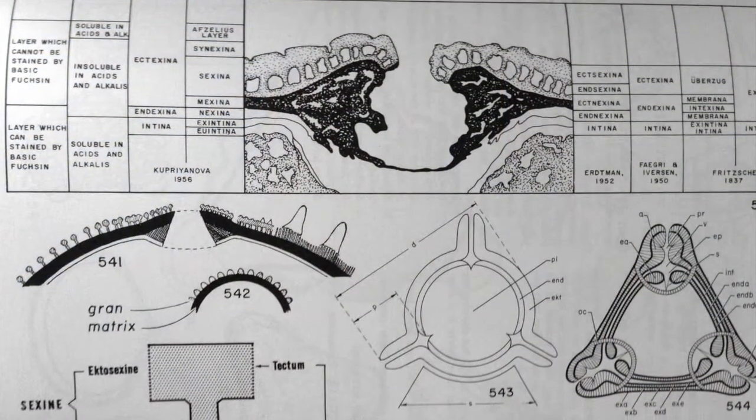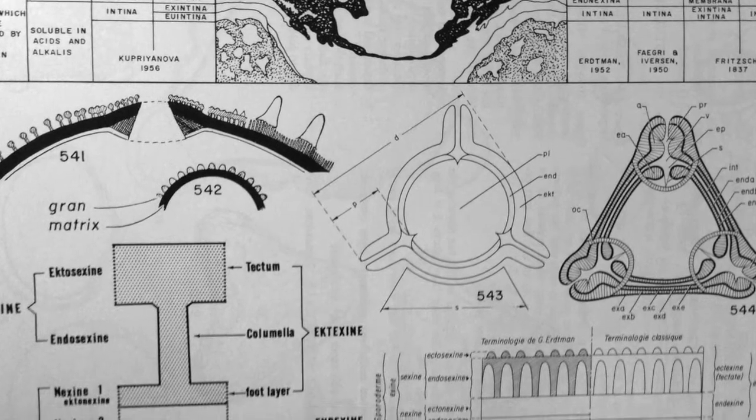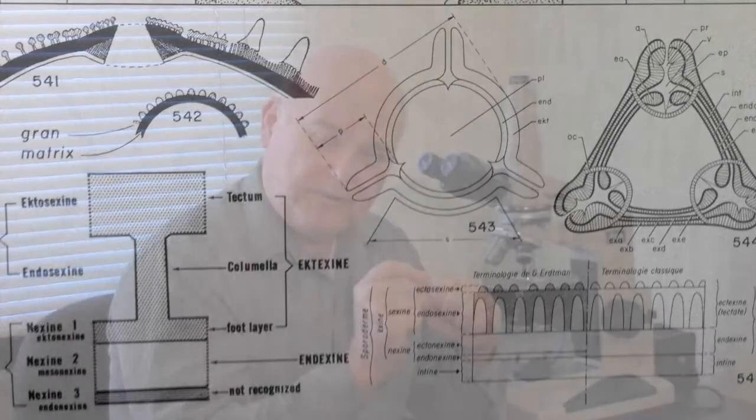A pollen grain is made up of multiple layers. So that on the outside, the surface texture will show up. We'll see some nice examples of that. As we look deeper into the grain, we'll see what's called the exine, which is the outer layer, and the endine, which is the inner layer.